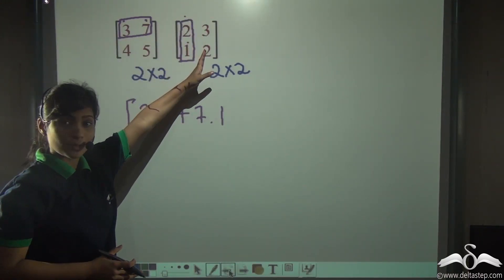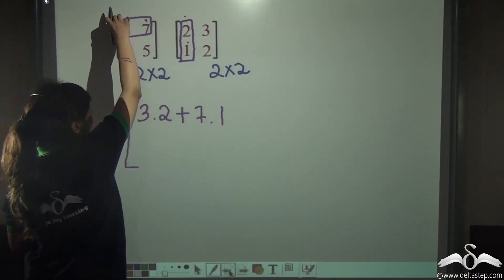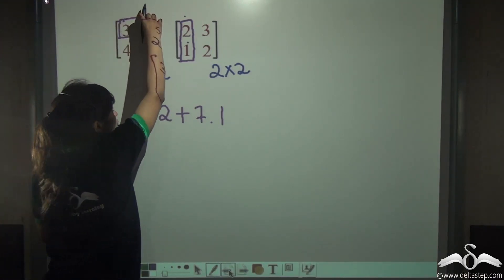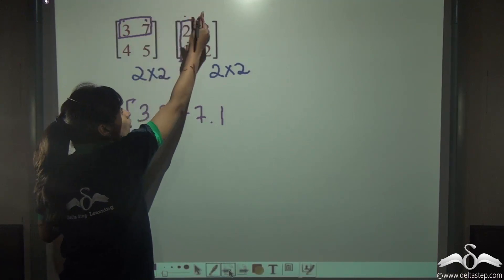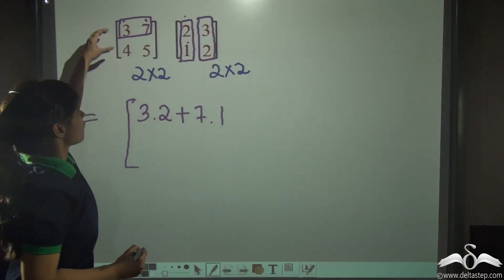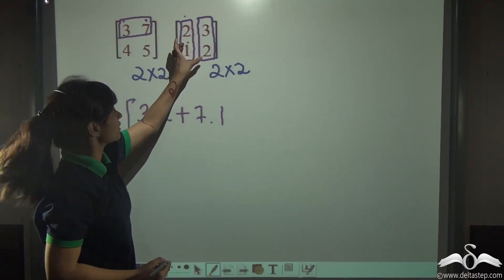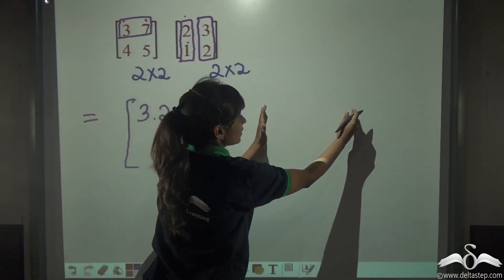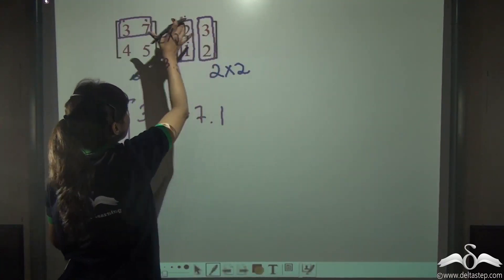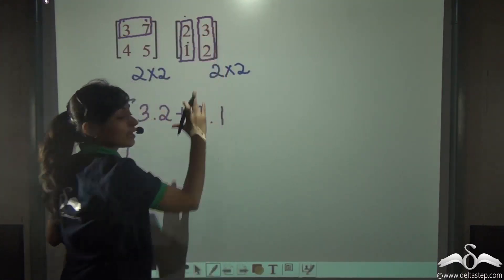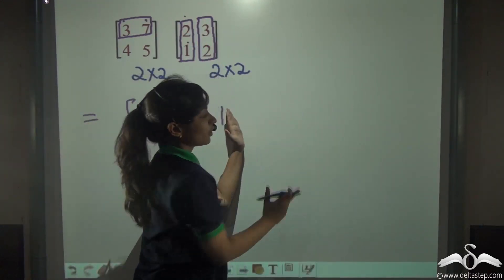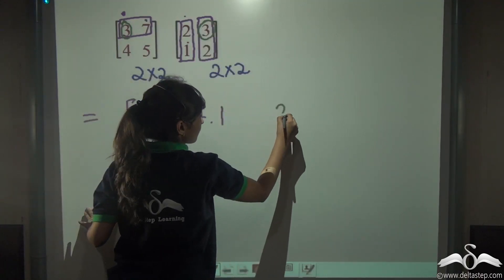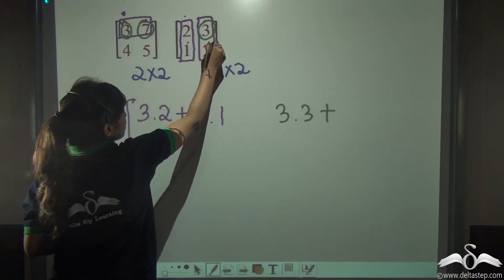In our previous case, we did not have a second column. Now there is a twist: after finishing the first row with the first column, we do not move on to the next row immediately. We complete the multiplication with the first row first. So first row with the first column of the second matrix, then again the first row with the second column. The product of the first row of the first matrix and the second column of the second matrix is placed as the second element of the first row of the product matrix. So: 3 into 3 plus 7 into 2.